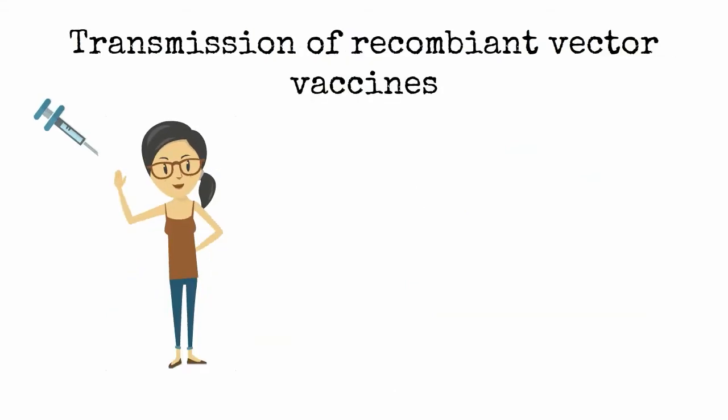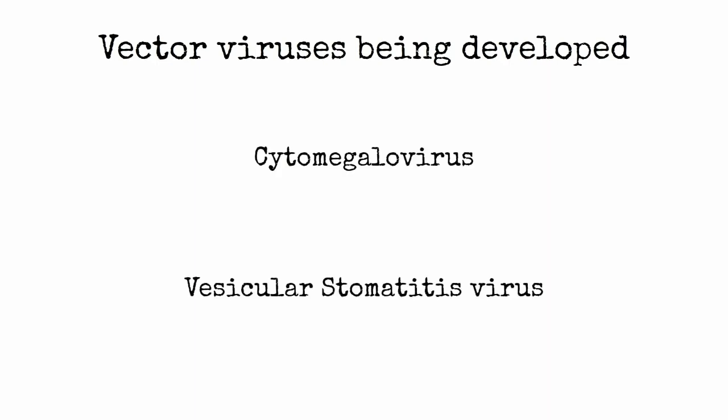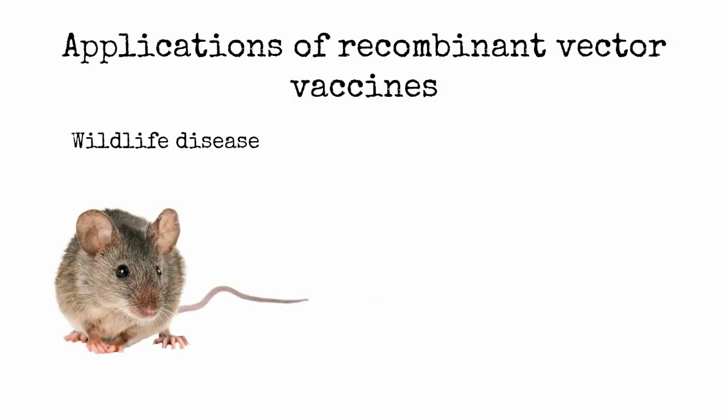When delivered to the host, the benign virus multiplies and the host builds immunity against the disease antigens that are encoded in the vaccine. Some viruses being developed as possible vectors against Ebola, for example, are cytomegalovirus and vesicular stomatitis virus. Recombinant vector vaccines have long been used against wildlife diseases and some have now entered human trials.